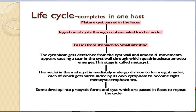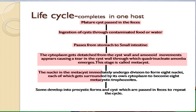From the mouth, the cysts travel to the stomach and then reach the small intestine. In the small intestine, the cytoplasm of the mature cyst detaches and the nuclei are released. This stage is called the metacyst.